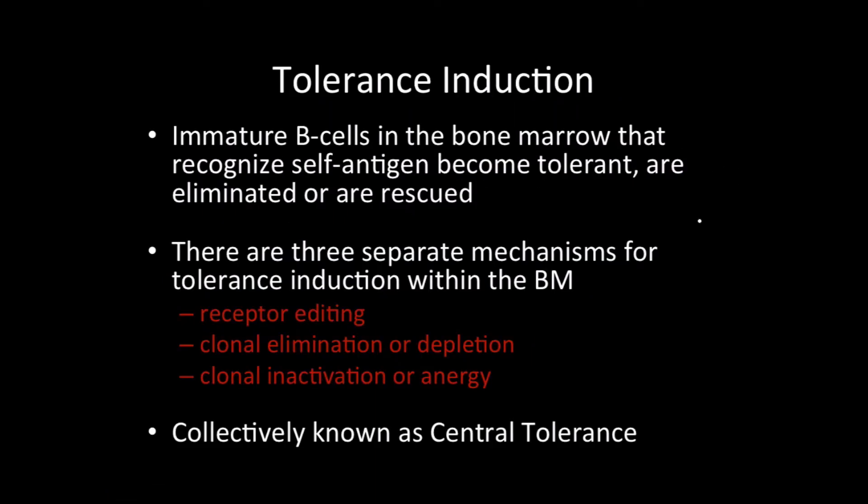Once we've made ourselves a functional immunoglobulin or B-cell receptor, we need to check and make sure that it's able to do its job. That's what tolerance is all about. Immature B-cells in the bone marrow that recognize self-antigens become tolerant - they're either going to be eliminated or rescued. There are three separate mechanisms that we have to make a B-cell tolerant, to make it tolerate its own neighboring cells.